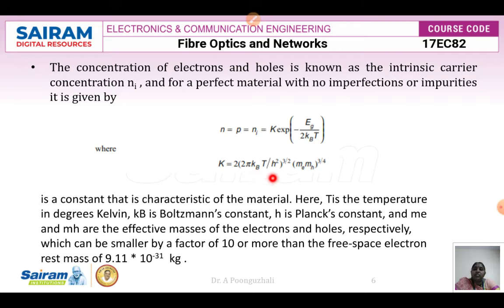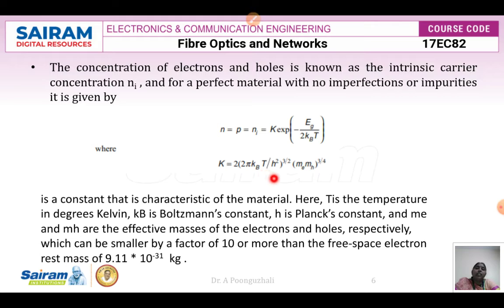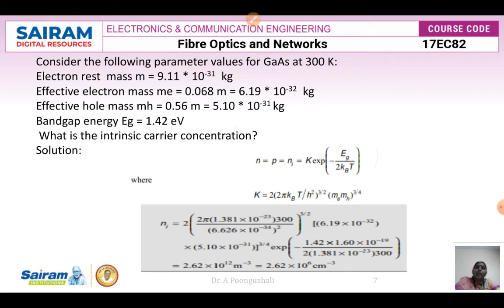Here, H is the Planck's constant. Mₑ and M_H are the effective masses of the electron and hole respectively. The free space electron has a mass of 9.11 × 10⁻³¹ kg. The constant K is represented as 2 × (2πKᵦT / H²)^(3/2) × (Mₑ × M_H)^(3/4). This gives the electron-hole concentration in the intrinsic carrier concentration.